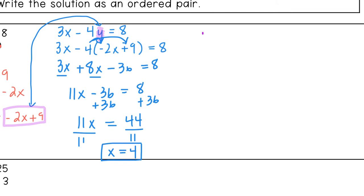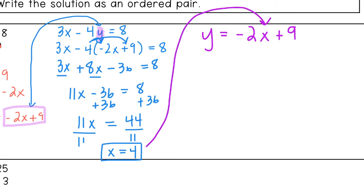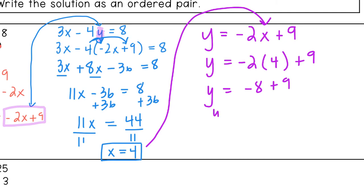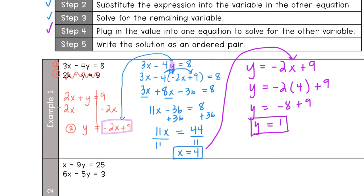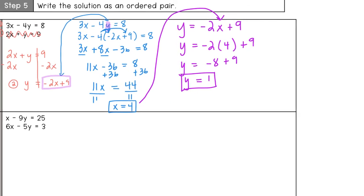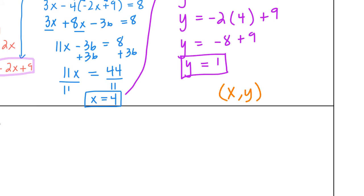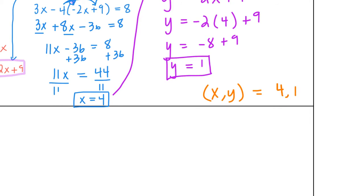Rewriting equation two: y equals negative 2x plus 9. Plugging in x equals 4: y equals negative 2 times 4 plus 9, so y equals negative 8 plus 9, which gives y equals 1. The last step is to write the solution as an ordered pair — always x comma y. So our solution is (4, 1). That means if we graphed this, the lines would intersect at the point (4, 1).